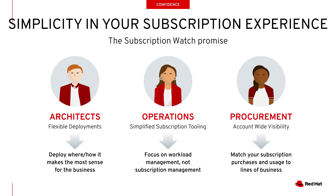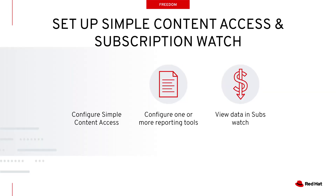The last persona we look at is the procurement persona. We want to give that person account-wide visibility so they can see the subscriptions that are in use and align those to various lines of business. Rich tagging systems are the types of things we want to use so people can keep track of subscriptions at an account-wide level.